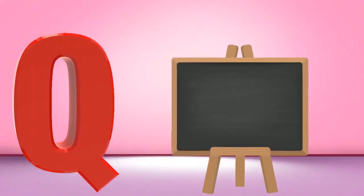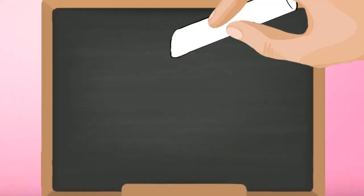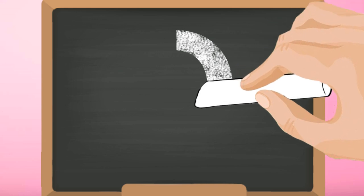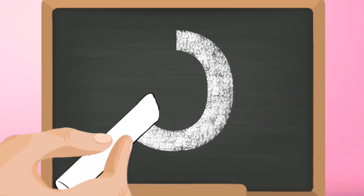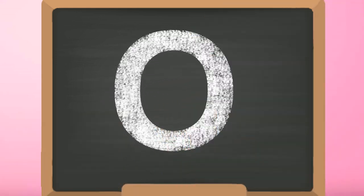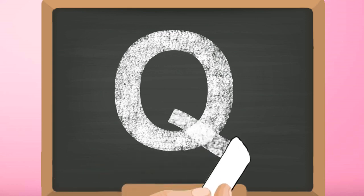Q, capital Q. Start from the top and make the capital letter O. Then from inside the O, make a slanting line to the right reaching the bottom.